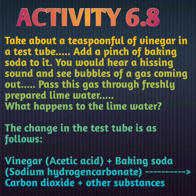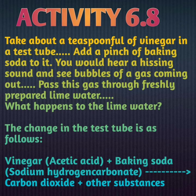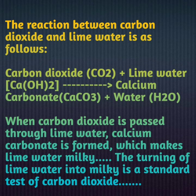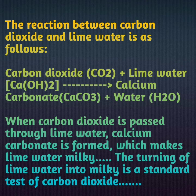What will happen to lime water? Lime water will turn milky — lime water दूध की तरह सफेद हो जाएगा. The gas evolved is carbon dioxide. When carbon dioxide gas is passed through lime water, it reacts with calcium hydroxide to form calcium carbonate + water, which makes the lime water milky. Vinegar + baking soda → carbon dioxide gas + other substances; CO₂ + lime water → calcium carbonate + water. Calcium hydroxide से calcium carbonate में convert हो जाता है. The turning of lime water milky is a standard test for carbon dioxide.